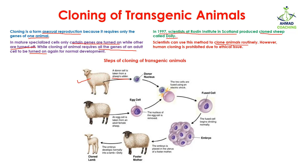You are going to take an egg from another donor — in this case you can also use a sheep as the donor. So we have this donor nucleus and this egg cell. What you are going to do is remove the nucleus from the egg, so now we have an egg cell with no nucleus present.